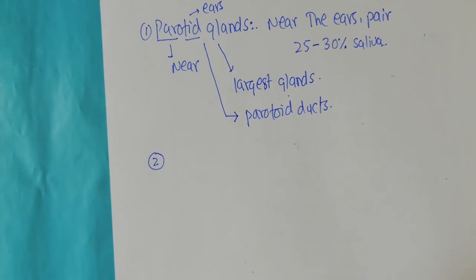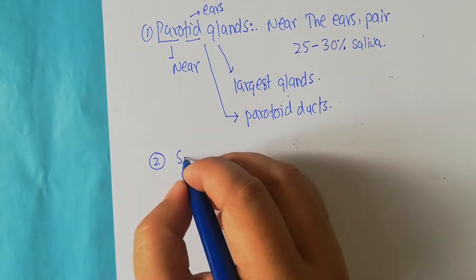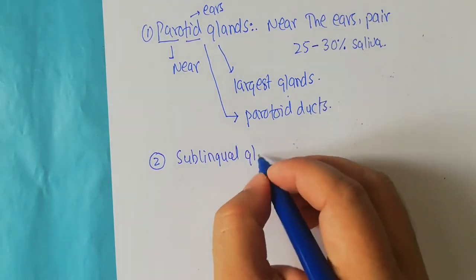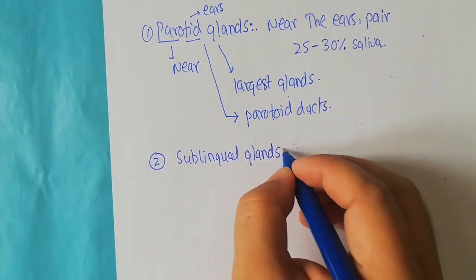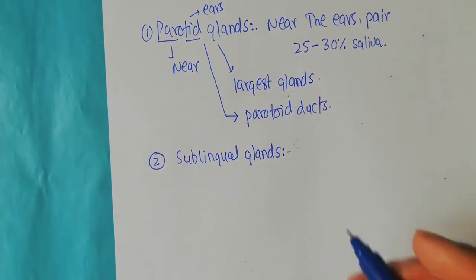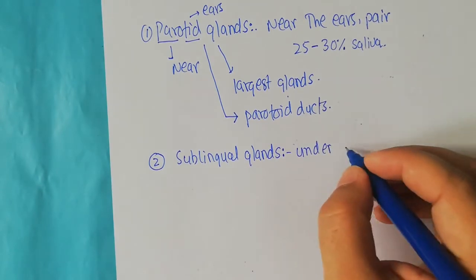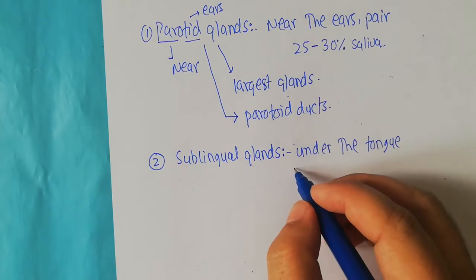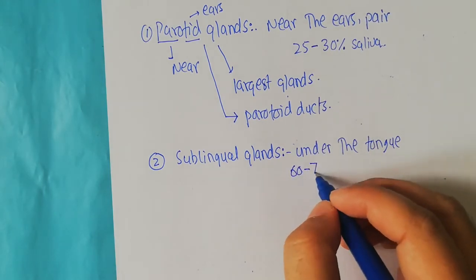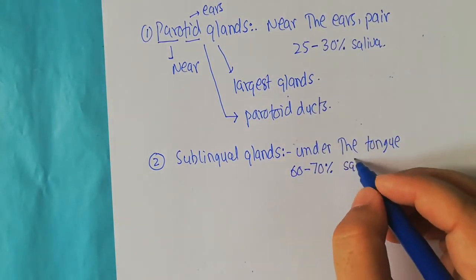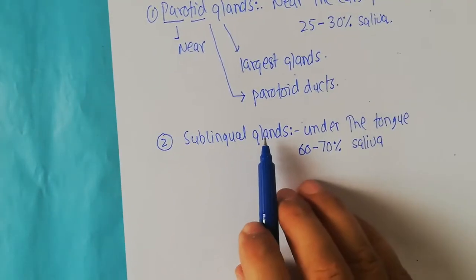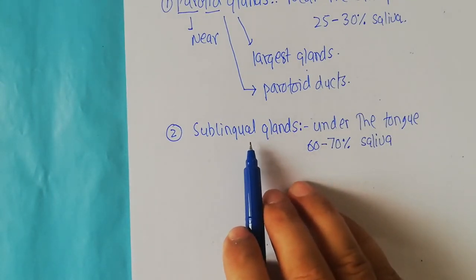The second type of major salivary gland is the sublingual glands, which are present under the tongue. About 60 to 70 percent of the total saliva is released by the sublingual glands, making them the most important major salivary glands in terms of quantity of saliva produced.